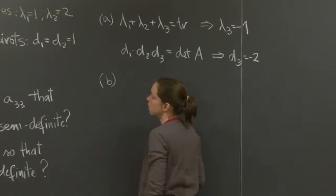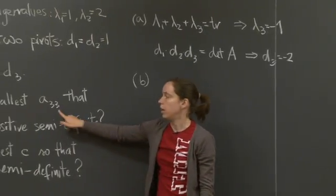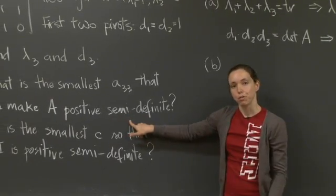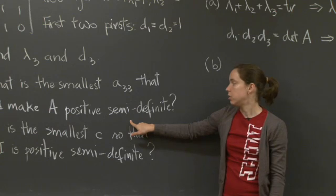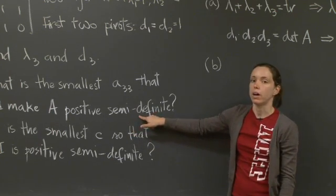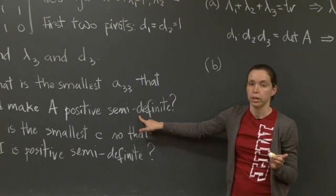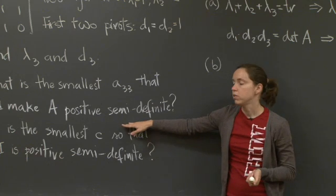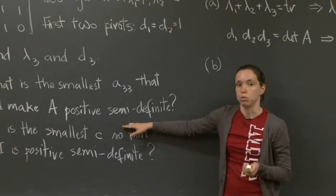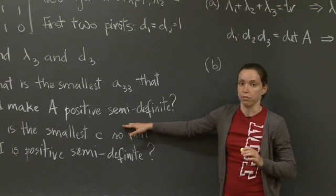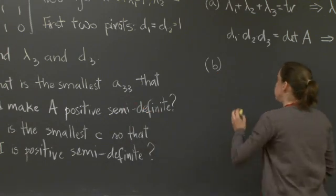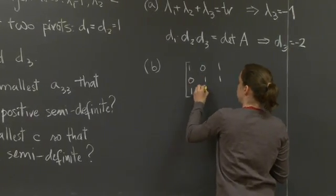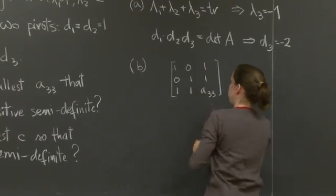Let's do part B. What is the smallest A(3,3) entry that would make the matrix positive semi-definite? First of all, note that A is not positive semi-definite yet. The eigenvalues are 1, 2, and minus 1 — minus 1 is negative, so the matrix is not positive definite and not even positive semi-definite. Positive semi-definite means that all the eigenvalues will be either positive or 0, that is, non-negative. So our matrix will be 1, 0, 1, 0, 1, 1, 1, 1, and we're allowed to change this third entry.